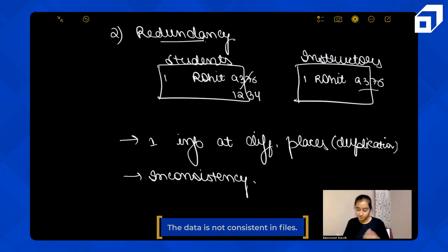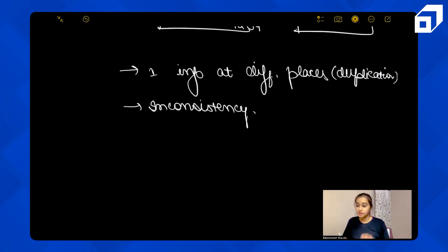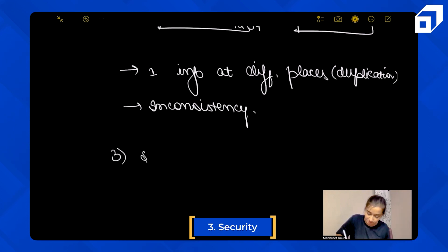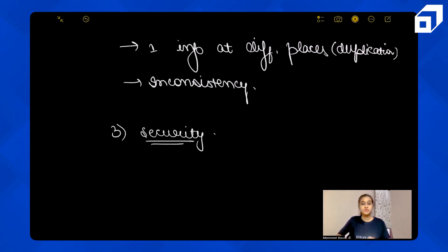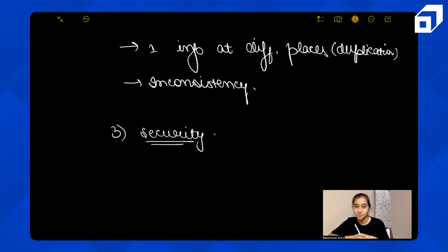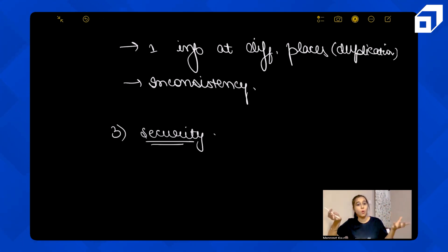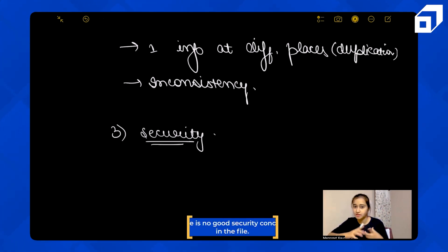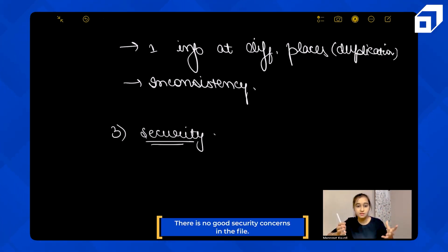The third problem is security. If someone gets access to a file, they can read your whole data. There are passwords, but the password is tied to the file — if you get the file's password, you get access to the complete file and all its data. So there is no fine-grained security in file-based systems.